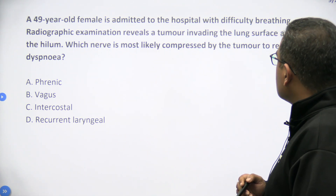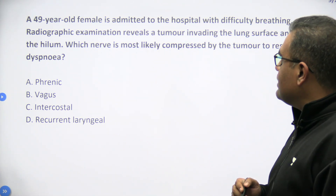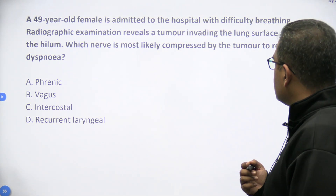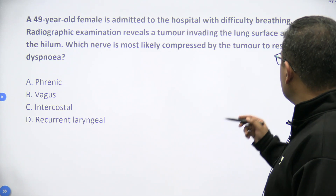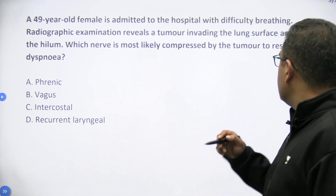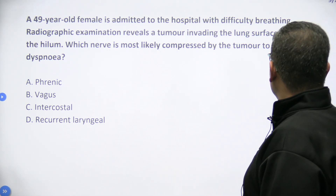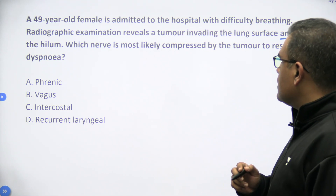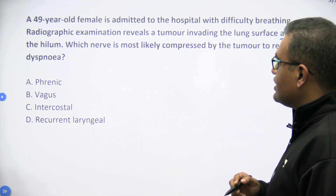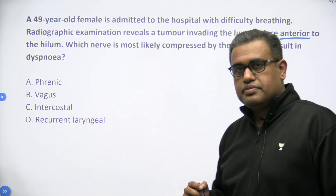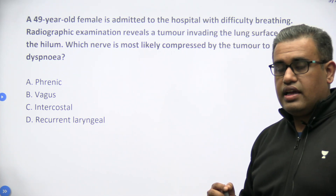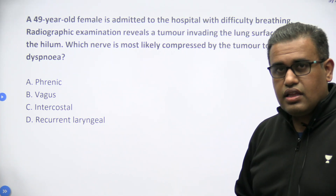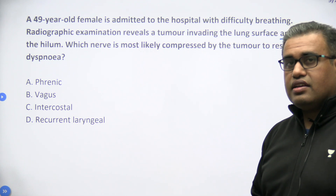A 49-year-old lady is admitted to the hospital with difficulty breathing. Radiographic examination reveals a tumour invading the lung surface. The tumour is anterior to the hilum of the lung, and the question asks which structure is most likely compressed by the tumour to result in dyspnea.